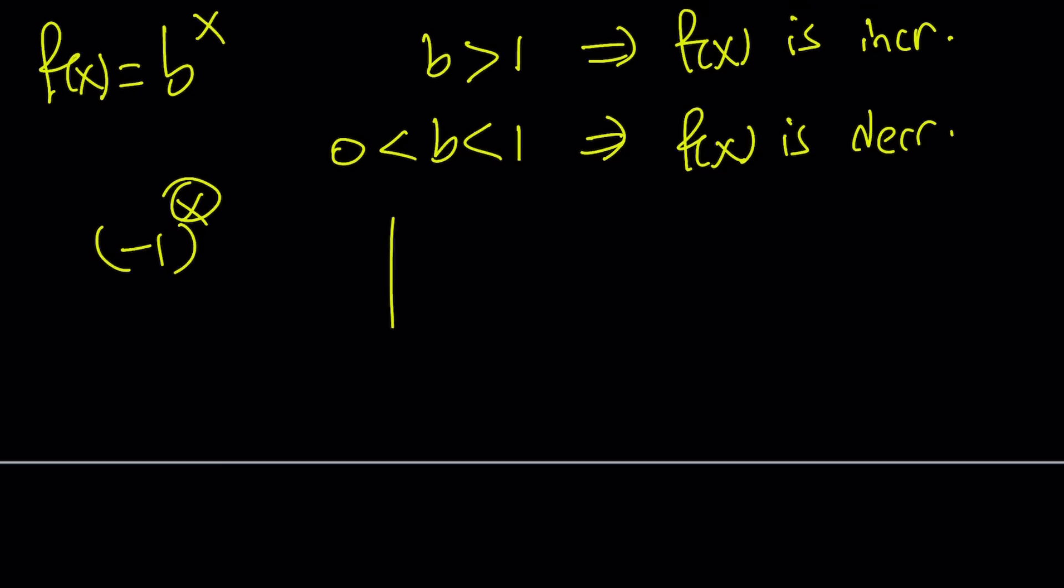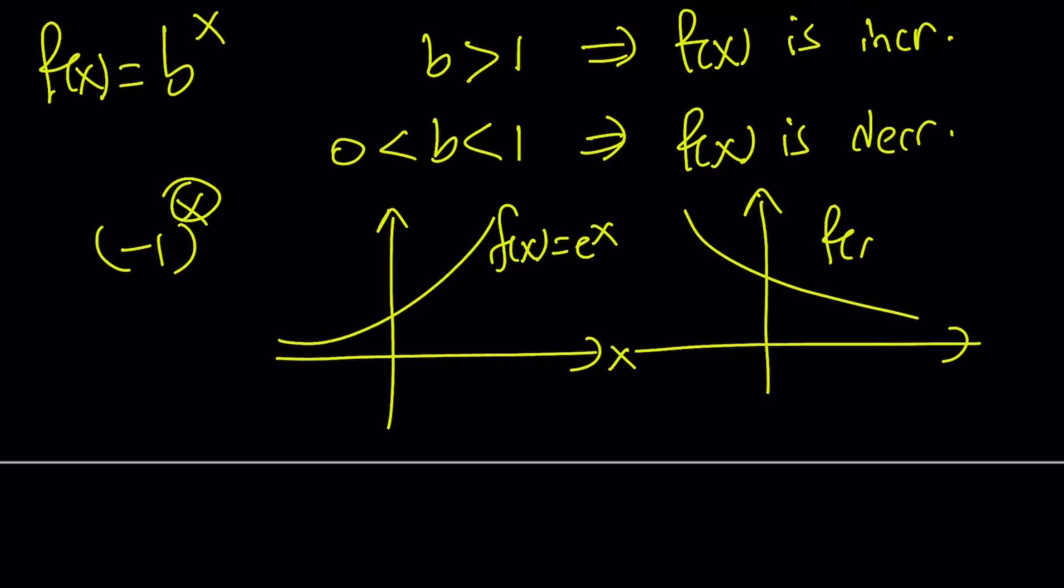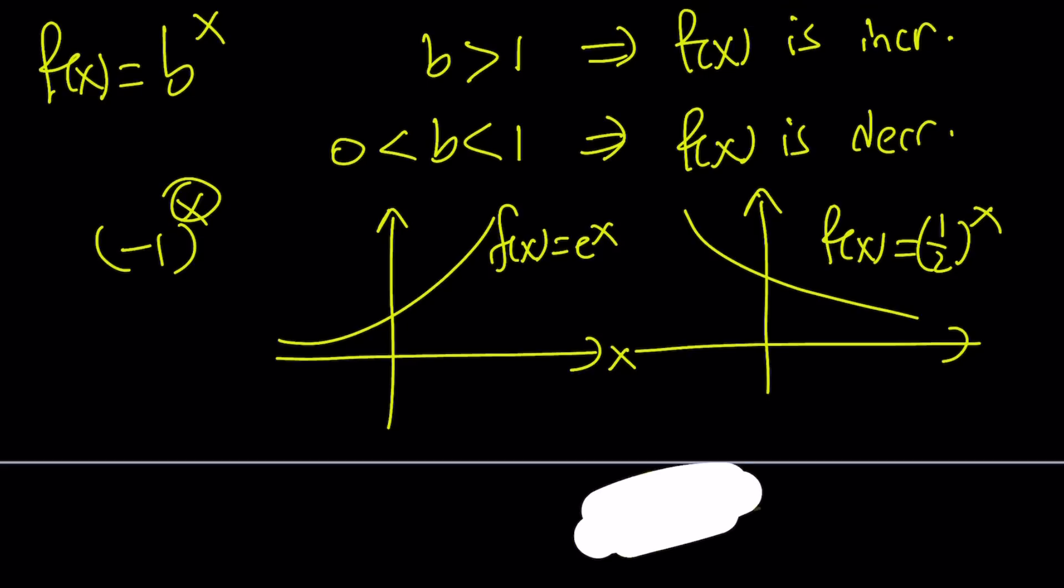If b is between 0 and 1 then our function is going to be decreasing. Let me show you two examples. If you have f of x equals e to the power x, which is a very famous function, then our function is going to be increasing. On the other hand you may have something like f of x equals one half to the power x. Then that's going to be a decreasing function. Why? Because as x increases we're talking about higher powers of one half, which means more one halves are being multiplied, and every multiplication is going to make the product smaller.